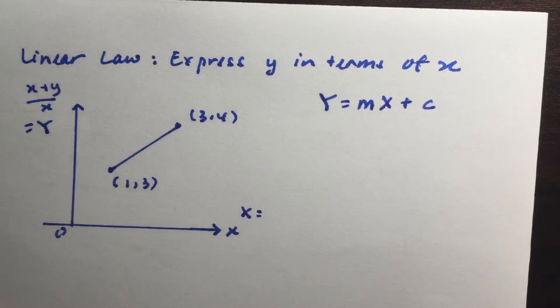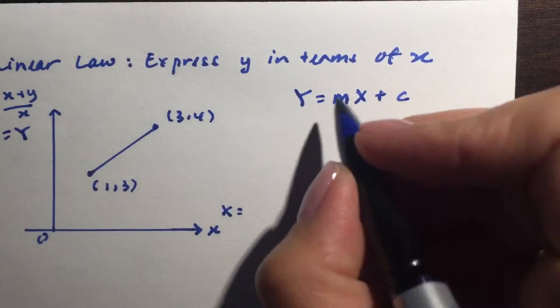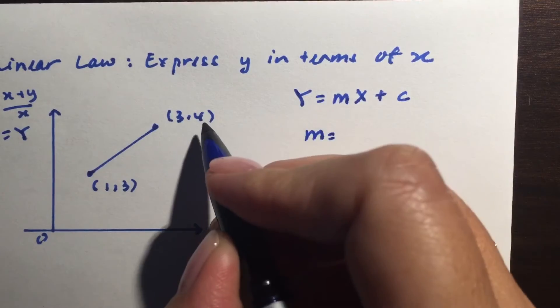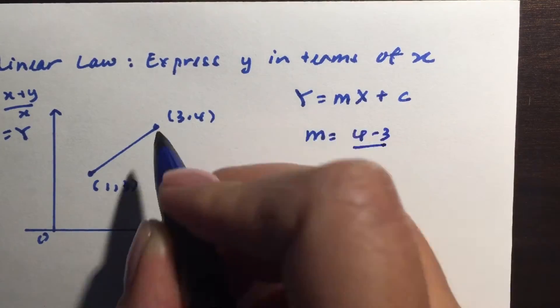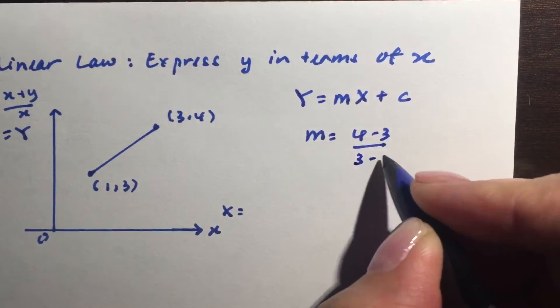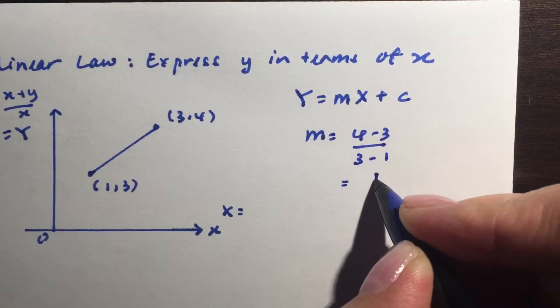Okay so we are given two coordinates here so we can actually find the gradient first. So y2 minus y1 over x2 minus x1, so we'll be able to get it as 1 over 2.